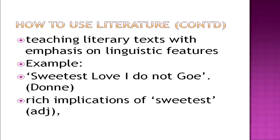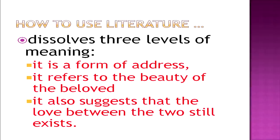While teaching literary texts with emphasis on linguistic features, it is important to draw learners' attention to such features. Let's take an example: 'Sweetest love, I do not go' — the first line of a poem by John Donne. Mark the rich implication of 'sweetest' — it is a superlative adjective. Why has this superlative form been used here? If we pay attention to the subtle nuances, we find it dissolves three levels of meaning: it is a form of address, it refers to the beauty of the beloved, and most importantly, it suggests that the love between the two still exists.